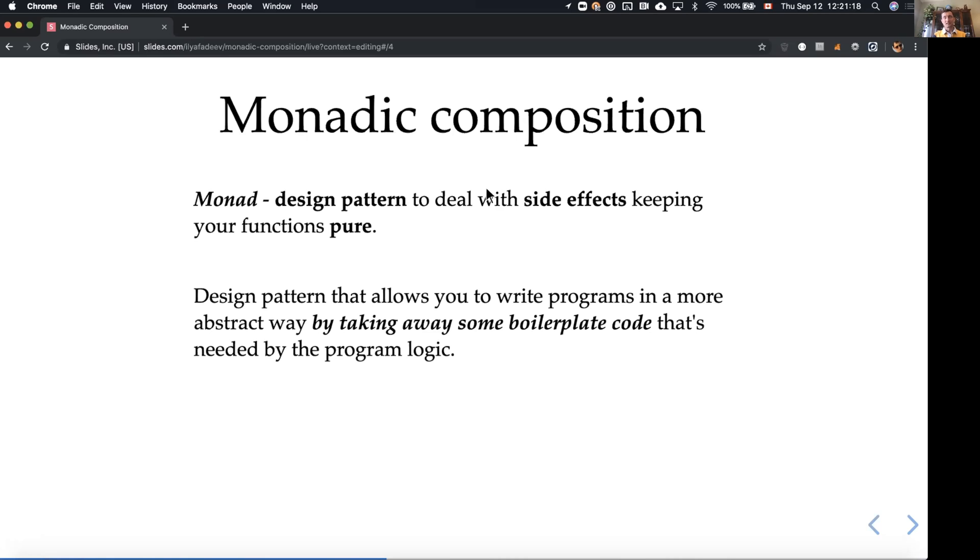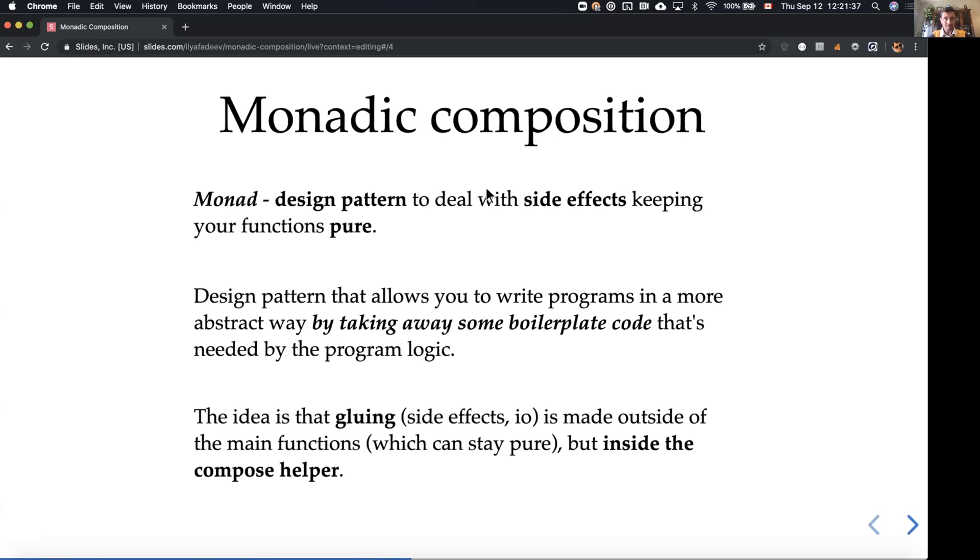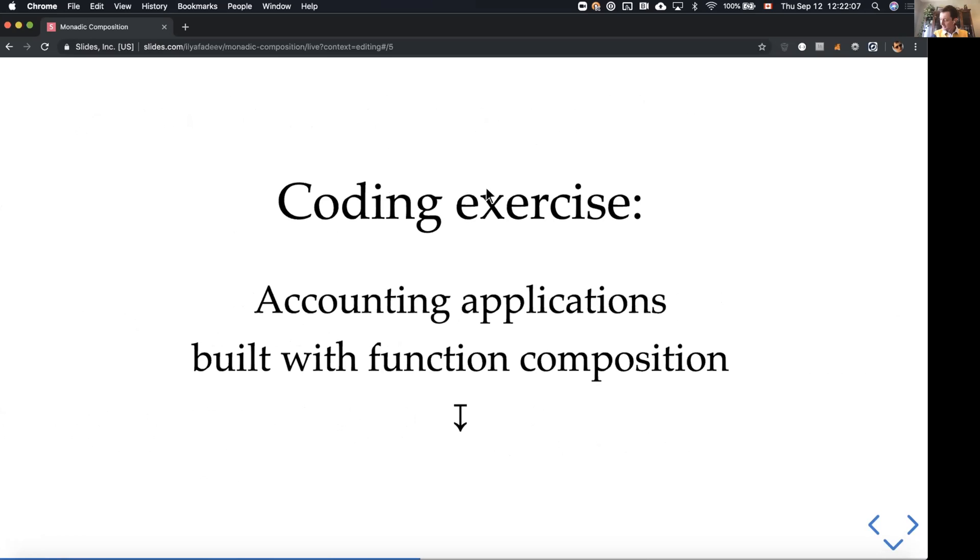So monadic composition, in a broader sense, is a design pattern that allows you to write programs in a more abstract way by taking away some boilerplate that your program logic requires. And the trick there is that you are building your application by composing, using function composition and you compose your functions and inside this composition helper, you do some extra gluing that your program requires. So you basically do all the side effects there and your functions can stay pure. And now let's dive into code samples. For this exercise, we will write an accounting application using function composition.